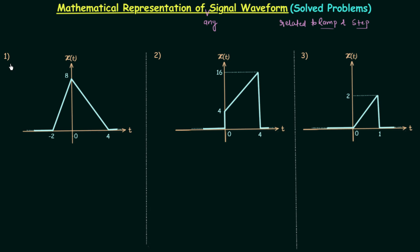Let's start with problem number one. The signal x(t) has a triangular waveform. As seen in the last lecture, we start from the left side of the signal and follow the signal flow. Initially signal x(t) is equal to 0. When t equals minus 2, there is an upward turn, and for an upward turn we take a positive sign. The length of the y-side is 8 and the length of the x-side is 2, so 8 by 2 is the magnitude of the slope. The ramp signal will be r(t+2) because the upward turn takes place at t equals minus 2.